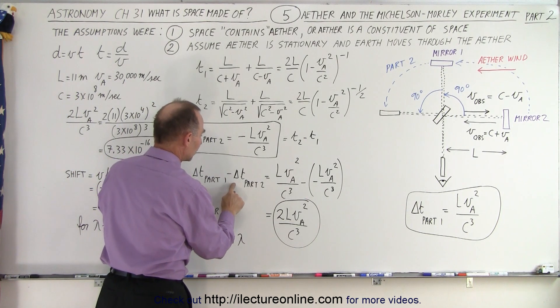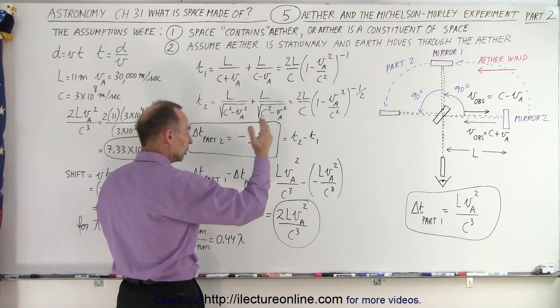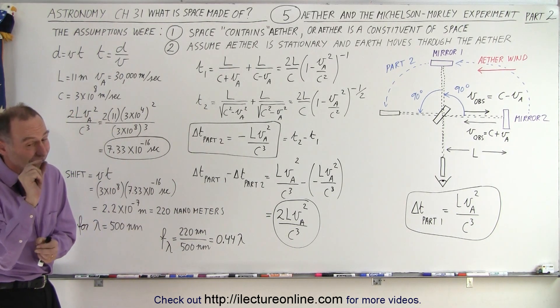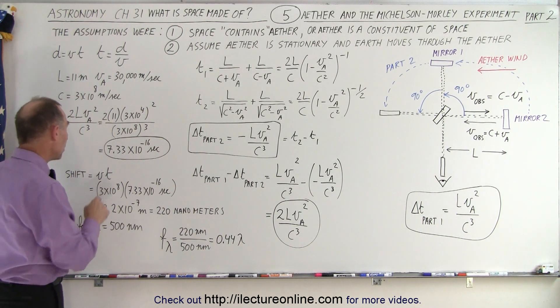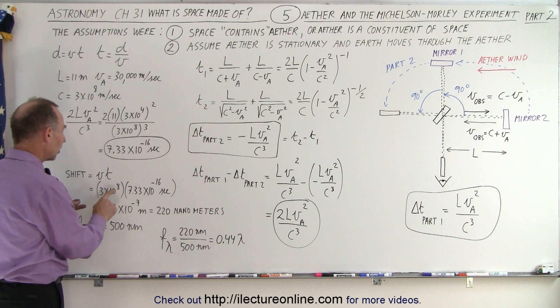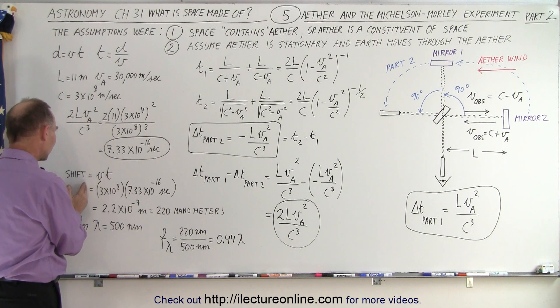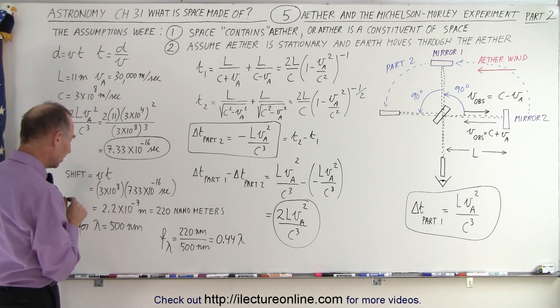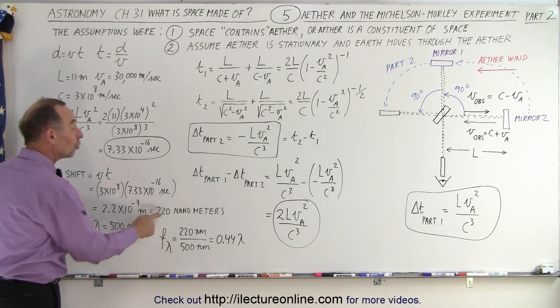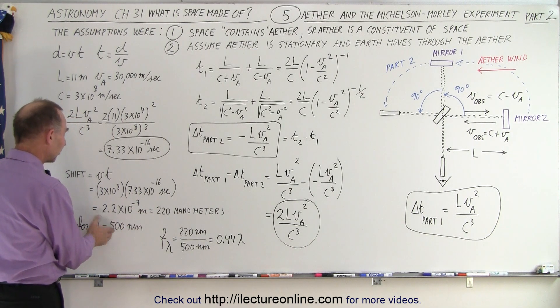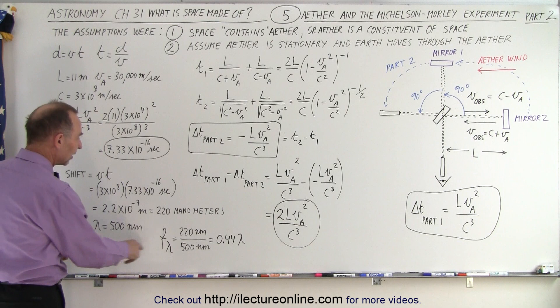We get this number right here. So what we then see is that the difference between these two times when we rotate it through 90 degrees is going to be equal to 7.33 times 10 to the minus 16 seconds. It's a very tiny amount of time. We multiply times the speed of light, and velocity times time gives you the shift in the light. So we get the relative shift in the light which ended up being 220 nanometers.